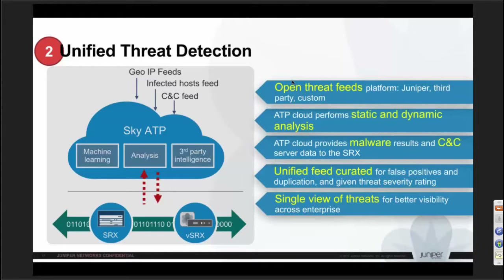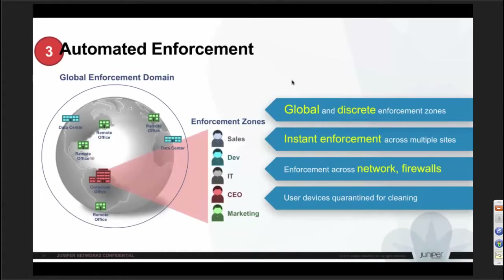In the policy engine, once the threat is compiled you can have two types of rules: global rules applicable to all locations, and site-specific or user-specific rules. Enforcement is instant. Normally when you make a change in the firewall, you need to commit it, creating a small disconnect. In the feed-based, intent-based SDSN model, the top-level rule remains the same even in the firewall — the rule is based on macros, and inside that the IP address list keeps changing, enforced by the policy engine. Rules are automatically enforced across the network and firewall, and third-party integration such as patch management servers can also be used for remediation actions.